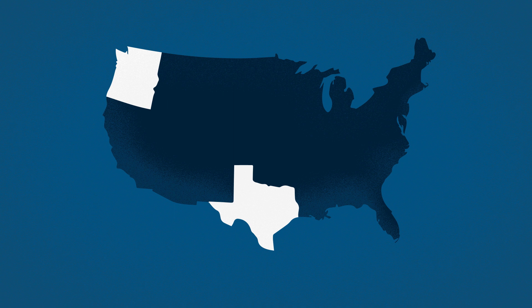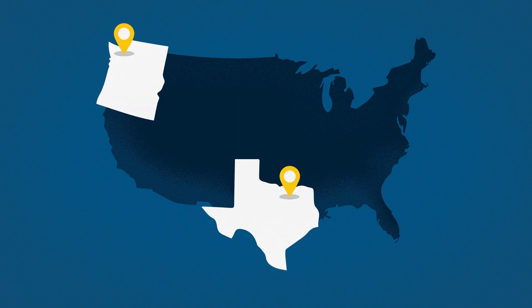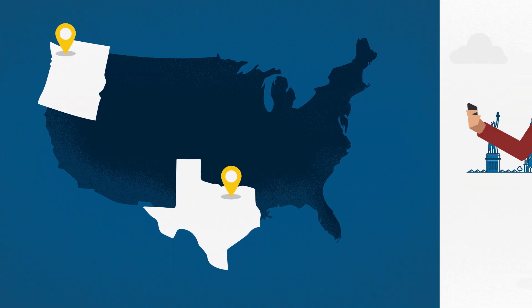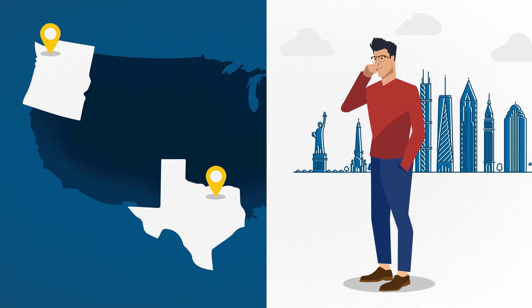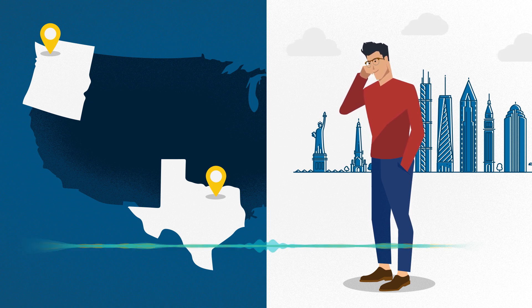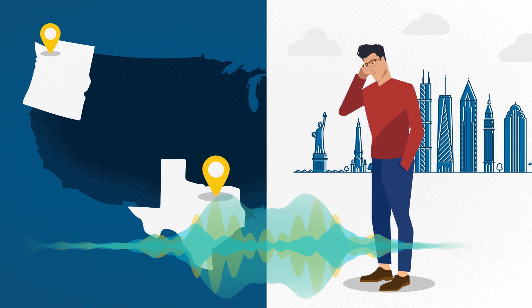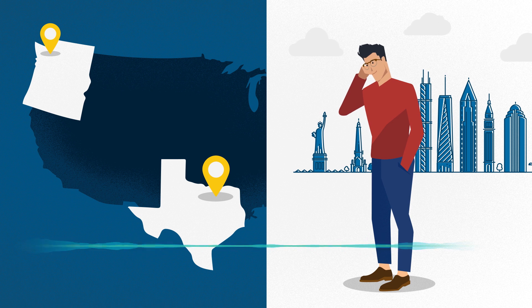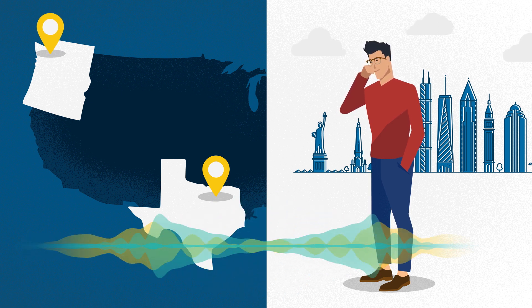As another example, maybe you're a business with multiple locations. A caller can dial into your primary business number and be routed to those locations easily — press 3 for our Dallas location, press 4 for our Seattle location.